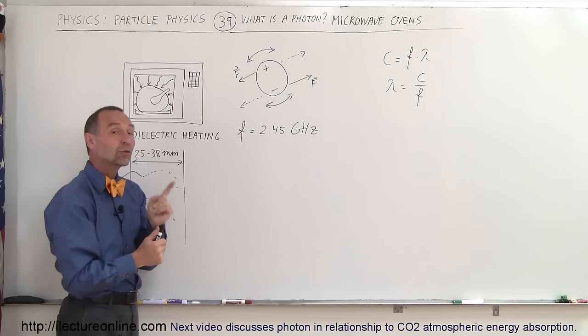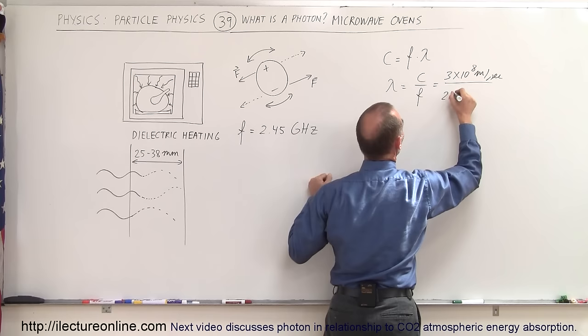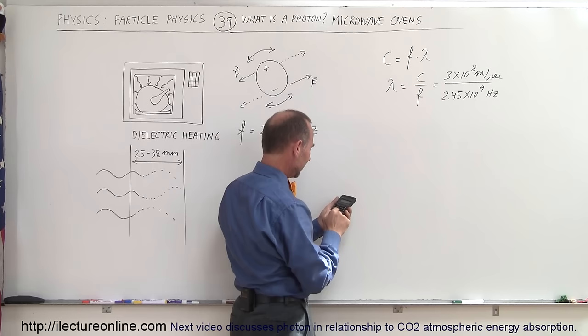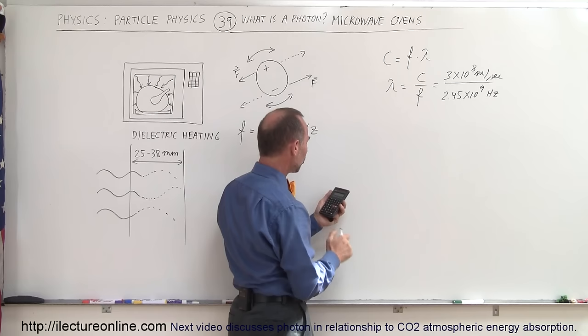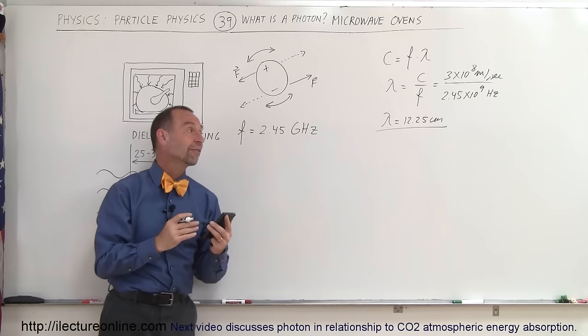So when we plug in the numbers we get 3 times 10 to the 8 meters per second for the speed of light divided by the frequency of 2.45 times 10 to the 9 hertz, because giga is 10 to the ninth. Now I need the calculator to figure that out. Alright, so we have 3e8 divided by 2.45e9 and that leaves us with about 12.25.